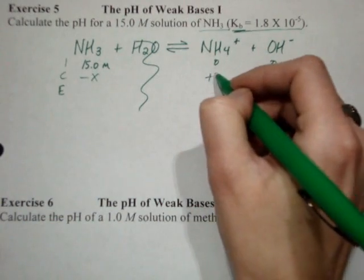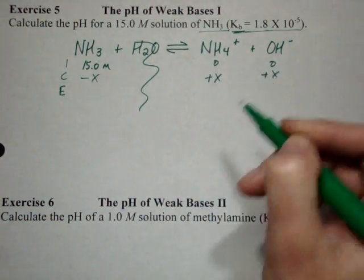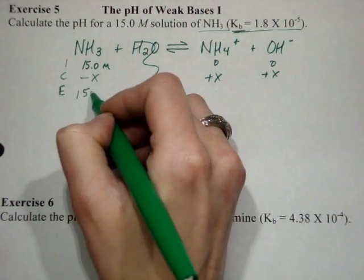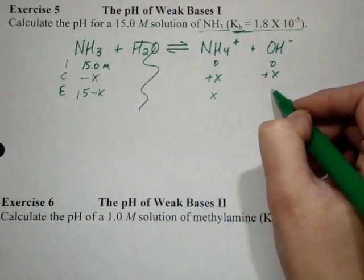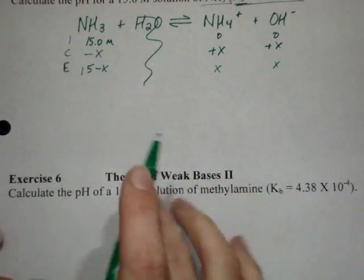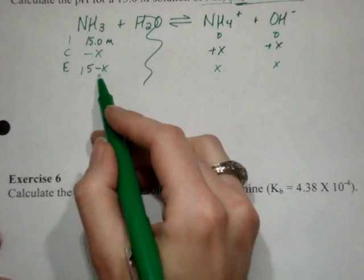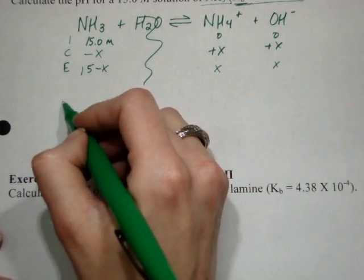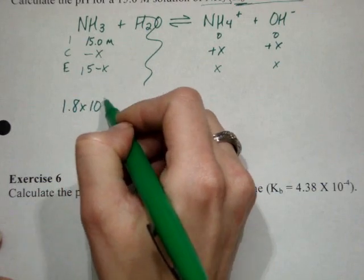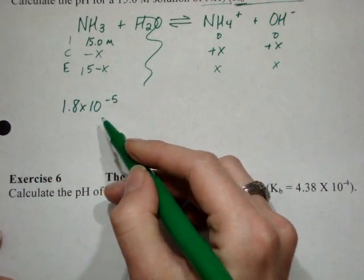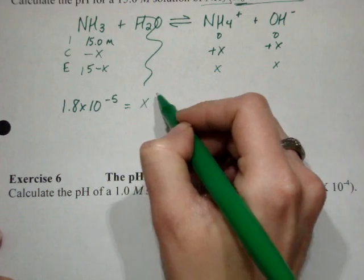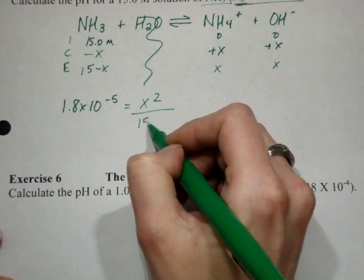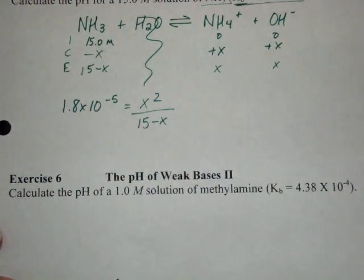So now I can do my changes of my minus and plus X. If you're bored of this, you can go ahead of me. Come back when you catch up. Same scenario, only now I have a KB instead of a KA. So I have 1.8 times 10 to the minus 5th. Yes, that does happen to match the one for acetic acid. Equals X squared over 15 minus X.